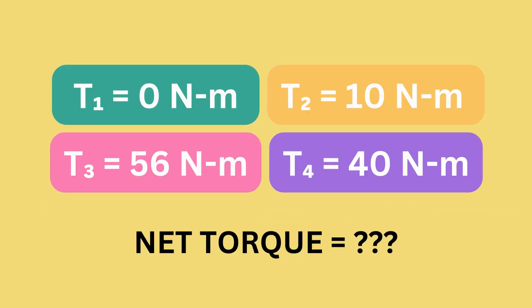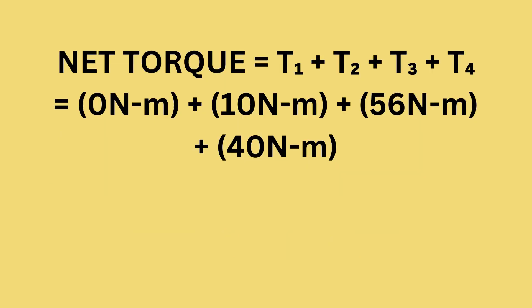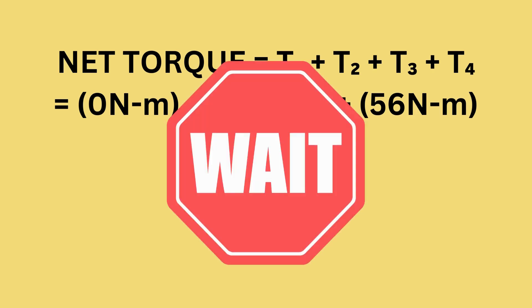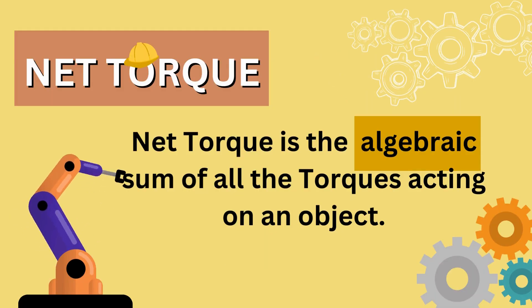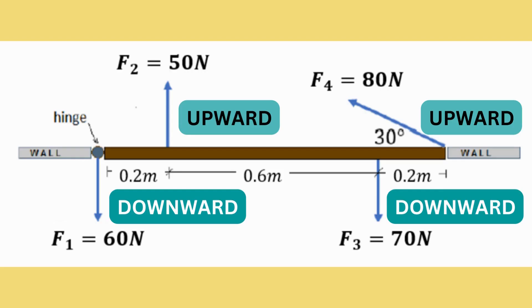Now that we have the values of the four individual torques, we can now solve for the net torque. The net torque will equal 0 newton meter plus 10 newton meters plus 56 newton meters plus 40 newton meters. But wait, this is not the final equation yet. Remember that net torque is the algebraic sum of all the torques, so we need to consider the direction of the forces, either downward, upward, or at an angle.